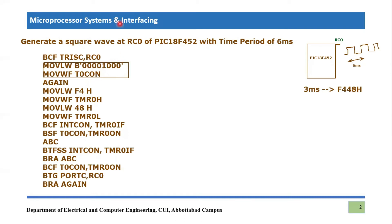The next step is to load the values of Timer Zero H and Timer Zero L. The value 0xF4 is loaded into Timer Zero H and 0x48 is loaded into Timer Zero L. Note that Timer Zero H is loaded first and then Timer Zero L — I have already explained the reason for this order. The next task is to clear the Timer Zero interrupt flag, which is present inside the interrupt control register.